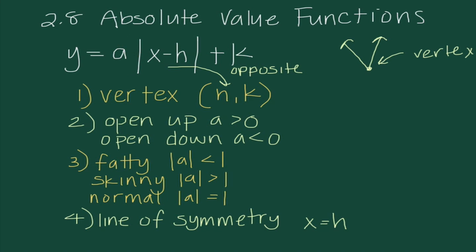The third characteristic is the width of our graph. Since this is absolute value, we can think of it like a slope, and we'll use some non-mathematical terms. 'Fatty' means the absolute value of A is less than 1 — a fatty fraction like 1/2 or negative 1/3 means a fat function. If the absolute value of A is greater than 1, like 5 or negative 7, we say it's skinny. If it equals 1, with a coefficient of 1 or negative 1, we say it's normal.